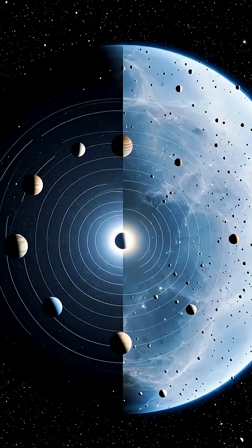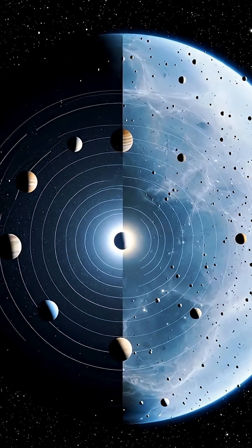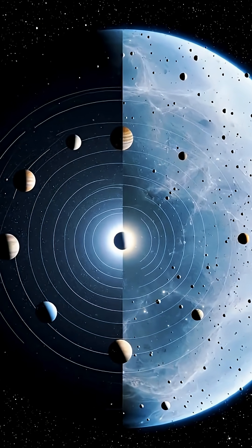The Oort Cloud is so massive that it would take the Voyager spacecraft 30,000 years to pass through it, and it's been traveling for over 45 years.